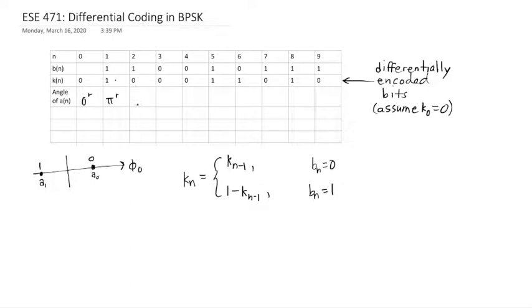And to send a zero, so that's zero radians. And zero, zero. And I send the symbol that is specified by the BPSK protocol, but I'm using kₙ, not the original bits bₙ.